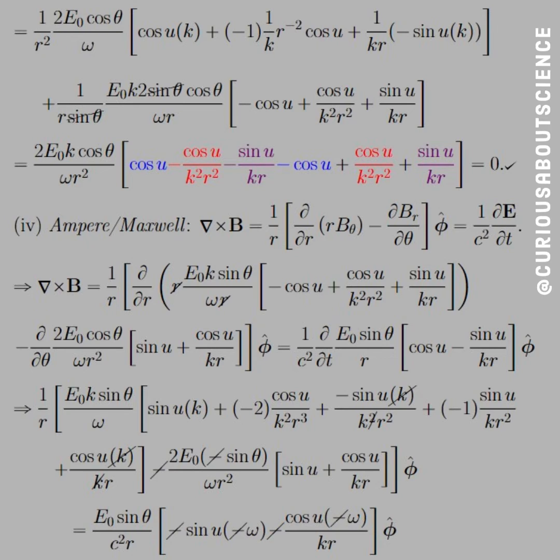Cancel out what we can. And let's see if it simplifies. Well, sure enough, what we're going to have to do is a little bit of color coordination after we factor out some common factors here, which were 2E₀k cos θ / ωr². And from the first part of the divergence, we get cosine minus cos u / k²r² minus sin u / k².